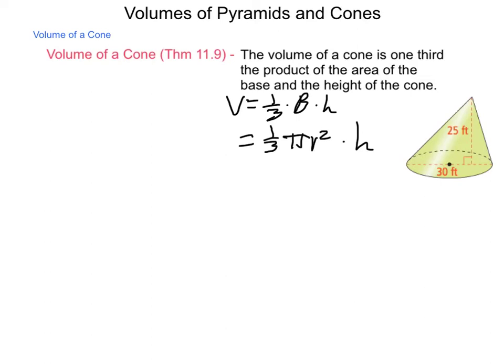So, you'll notice that the cone that is shown here is not a right cone. The top of it is not centered directly above the center of the circle. And that's okay, because according to Cavalieri's principle that we learned in our last lesson,